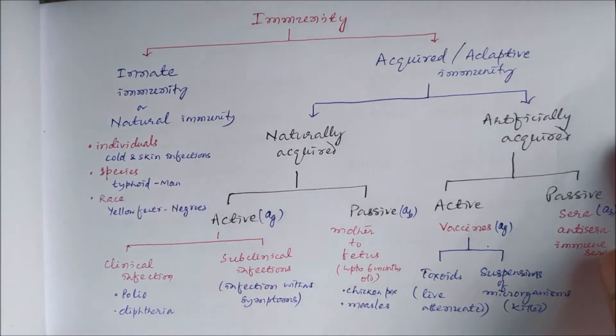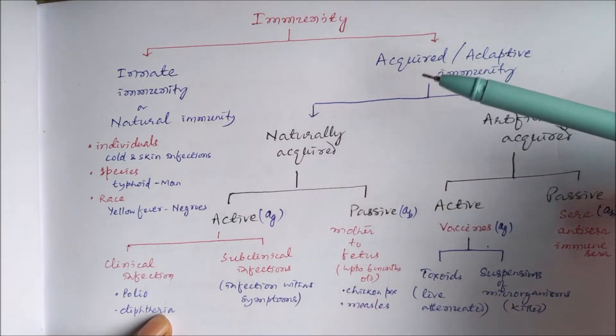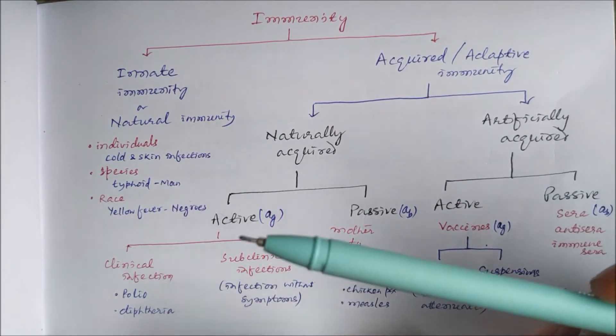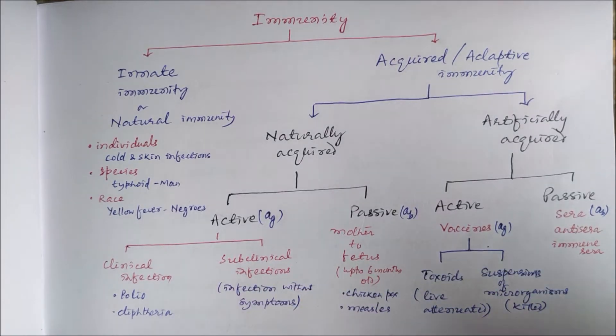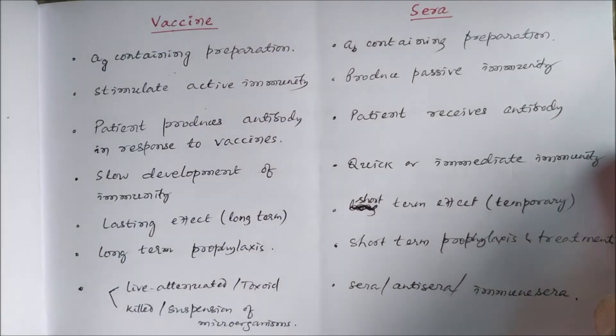Immunity is provided either through innate immunity or acquired immunity. This acquired immunity can be either active or passive immunity, or it can be naturally acquired or artificially acquired. For details you can refer to our previous classes.